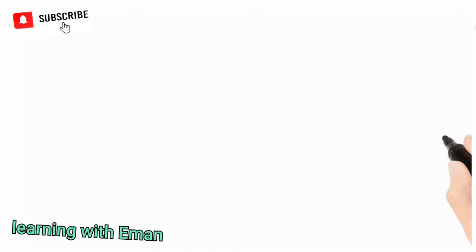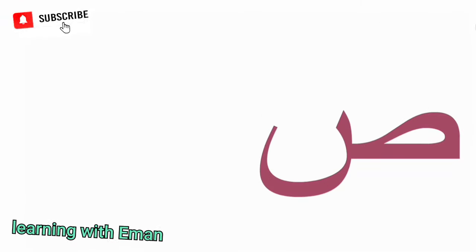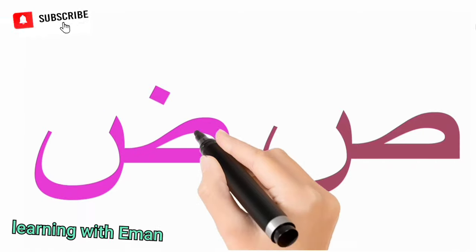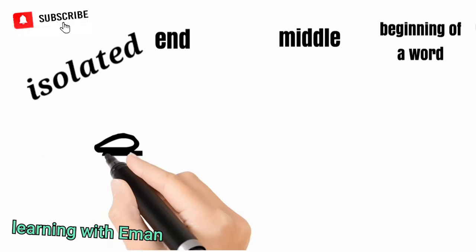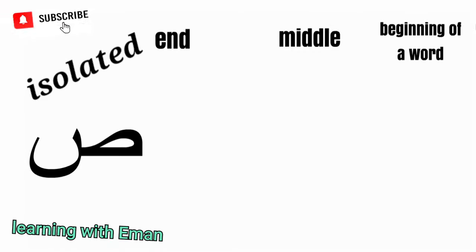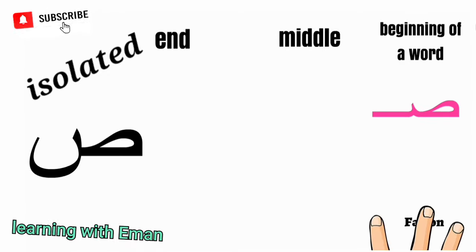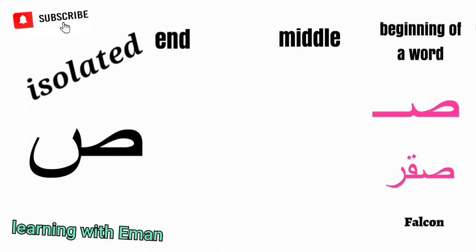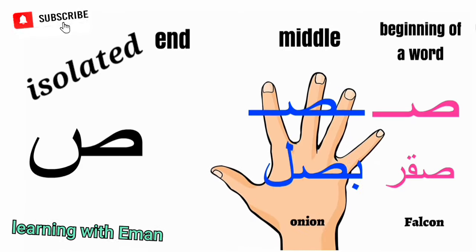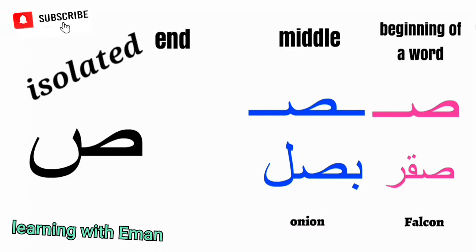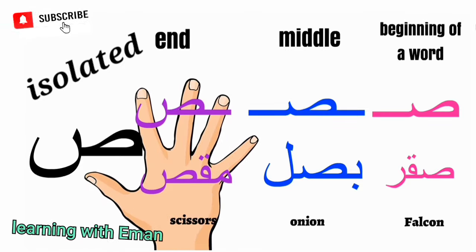The next letters of the Arabic alphabet are Sad and Dad. Sad and Dad look very similar except that Sad has no dots and Dad has one dot on top. Sad sounds like the letter S but with more of a whistle. At the beginning of a word, like 'Saqr', meaning falcon. At the middle of a word, like 'Basal', meaning onion. At the end of a word, like 'Miqas', meaning scissors.